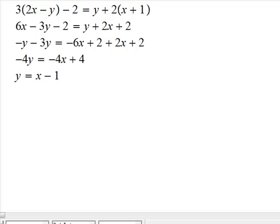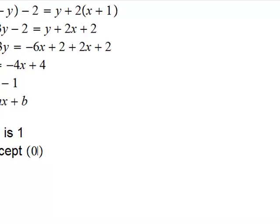Negative 4 over 4 is 1 and then 4 over negative 4 is negative 1. So, what we got here? The slope of this equation is what? If you compare it with y equals mx plus b, then the slope is 1 and who is my y intercept? My y intercept is 0, negative 1.